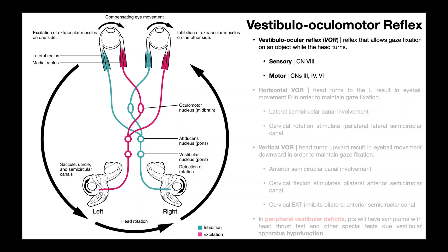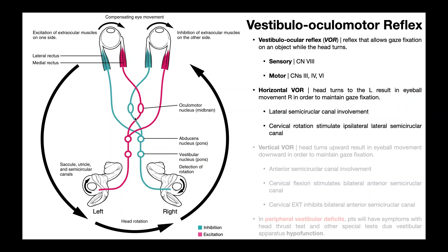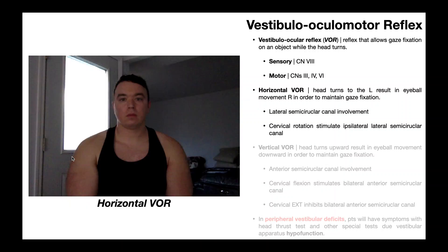The most common way to learn the VOR is by learning the horizontal VOR. I specify horizontal because there's also a vertical VOR that we'll see in a few minutes. With the horizontal VOR, head turns to the left result in eyeball movements to the right in order to maintain fixation on a particular object or point. Let's take a look at a video of the horizontal VOR.